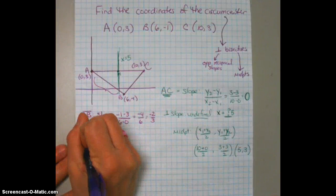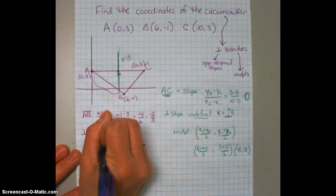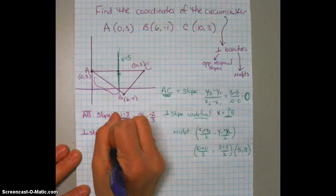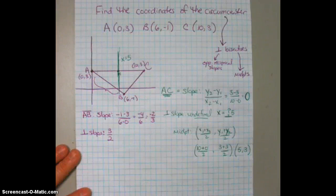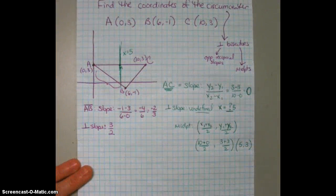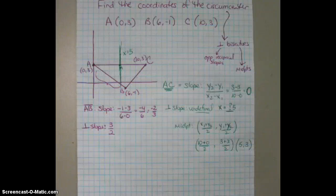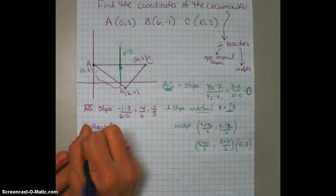So that means that the perpendicular slope that we're going to be using is positive 3 halves. Now, we also know that it's going to be passing through the midpoint of segment AB.